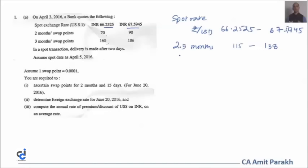The first part of the question is answered. For the second part, we find the forward rate. Since 115/138 is low/high (premium points), the US dollar forward is trading at a premium — so we add 115 to 66.2525 for the bid forward rate.